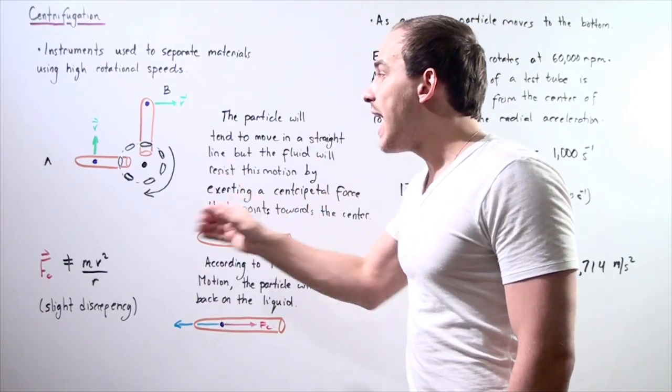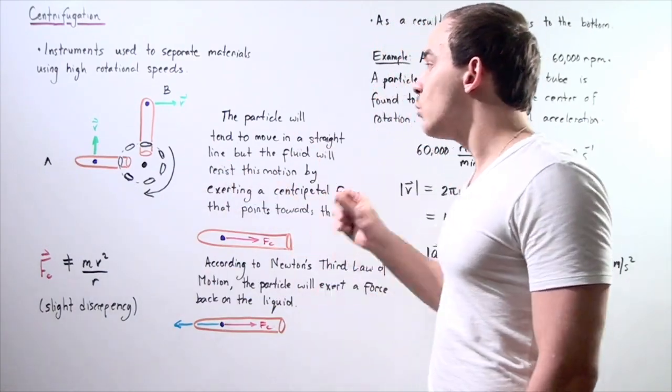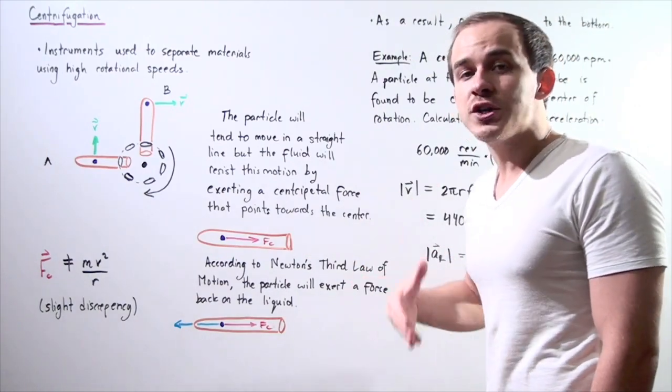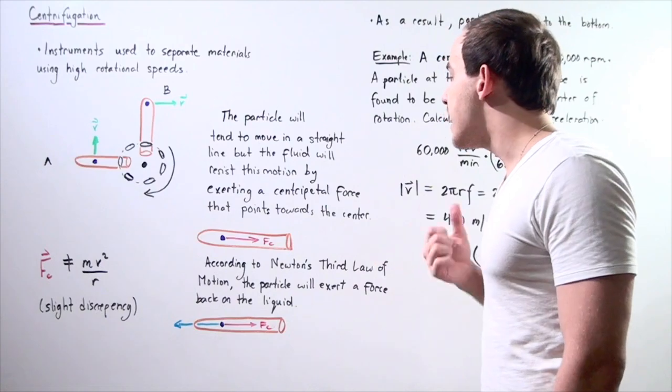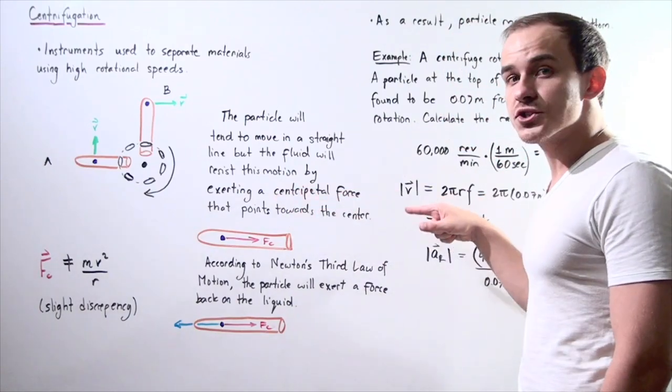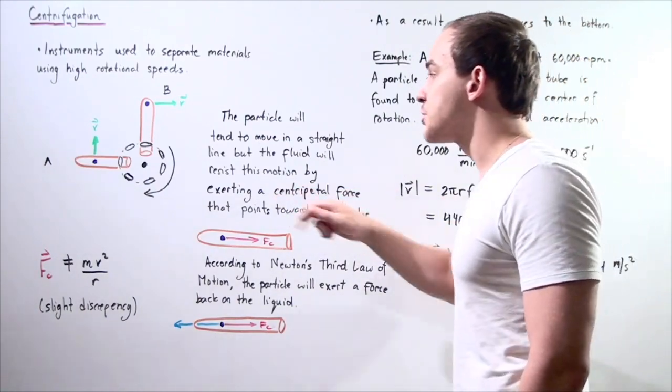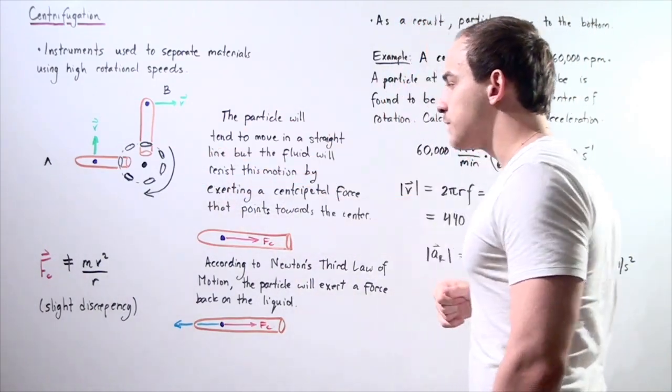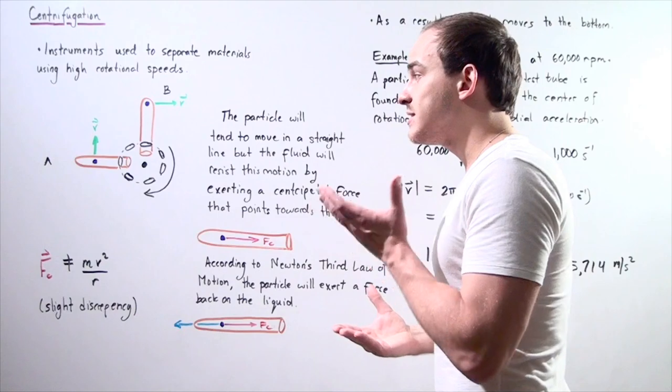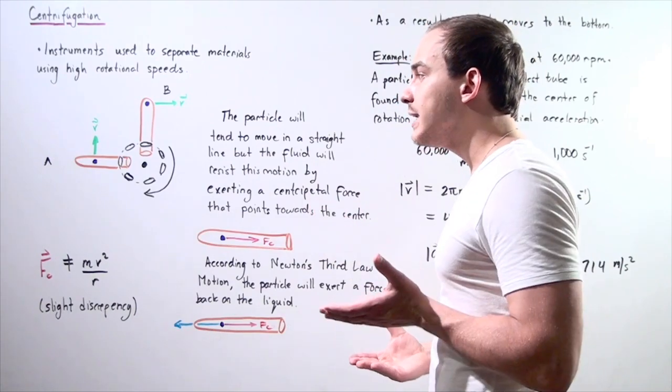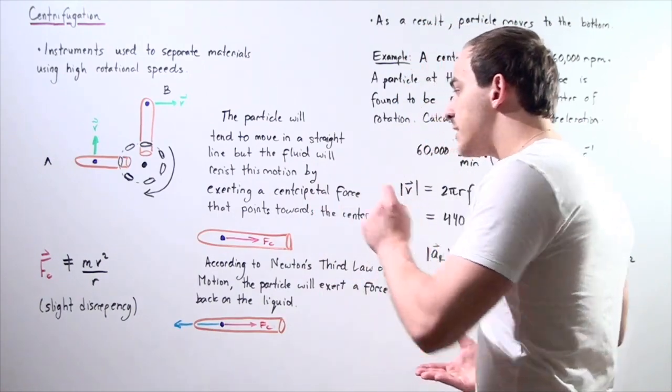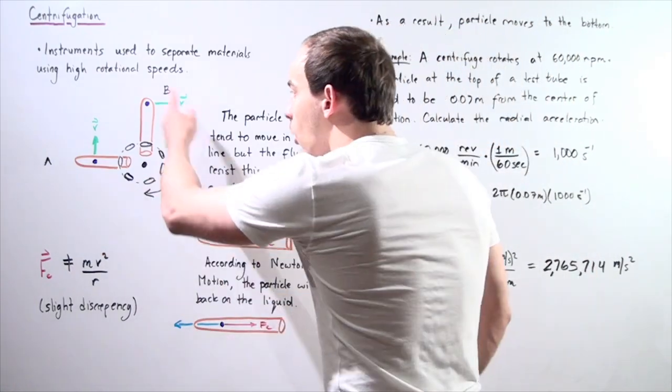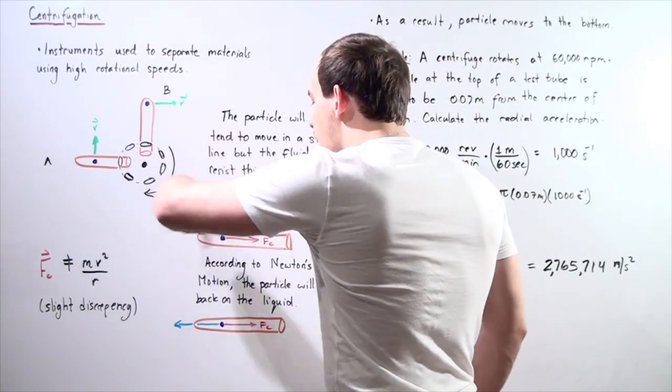But the fluid inside our test tube in which our particle is found will resist this motion, creating a force. And this force points towards the center of our rotor, towards the center of our centrifuge. So our particle tends to move in a straight line, but this force, known as the centripetal force, created by the fluid forces our particle to move in a circular path.